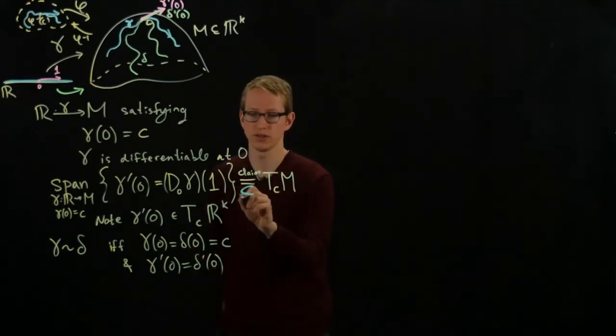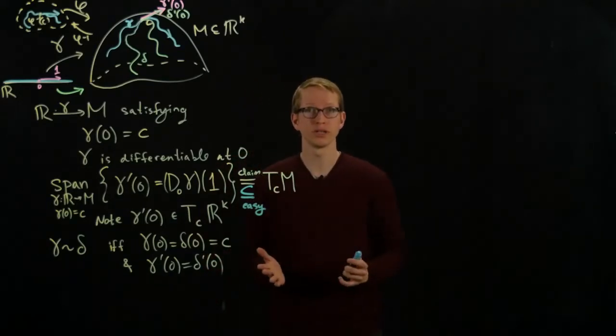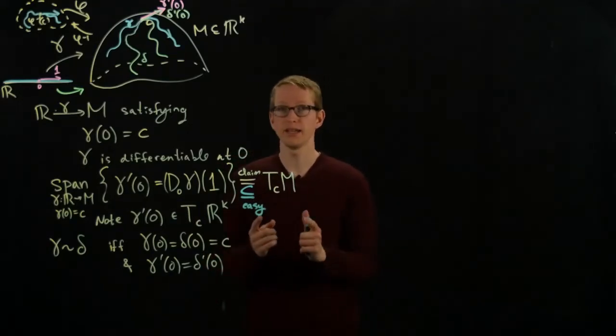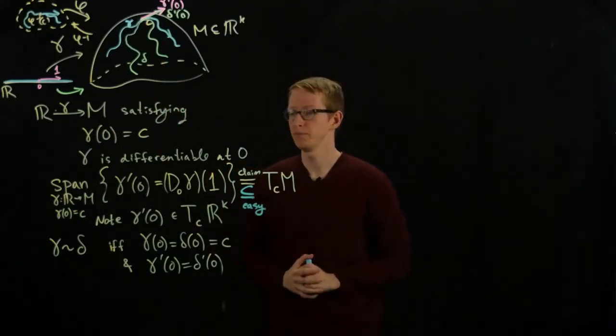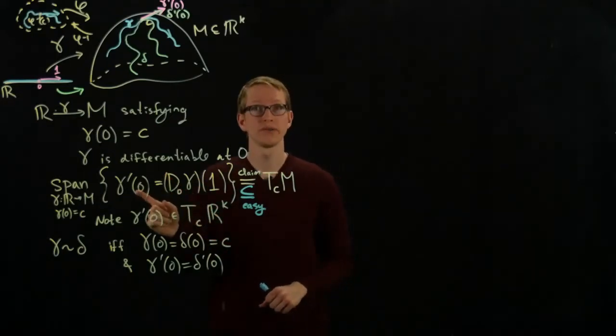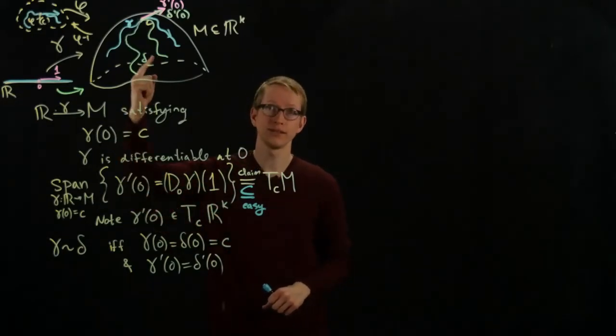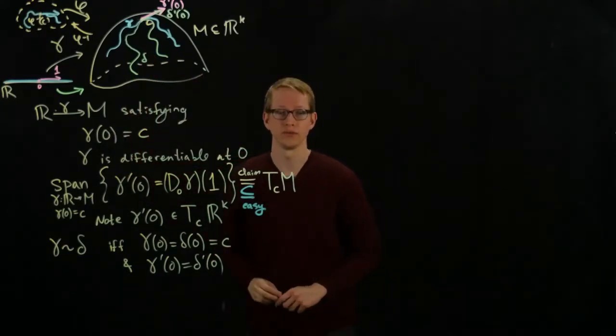So this direction is easy. What's perhaps a little bit more difficult to see is that if you give me any vector in the tangent plane at the point C of M, then I can construct a curve that passes through the point C, and its derivative is equal to that vector that I started with.